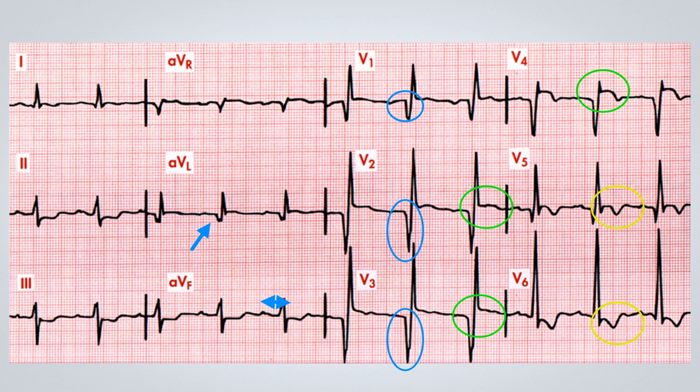If this ECG were seen for the first time, it could be compatible with an evolving acute myocardial infarction in the anterolateral wall for at least six hours. However, we know the ECG from a month ago was identical. So, what could be happening? We know the patient has anterolateral wall necrosis, and this change, particularly the ST segment elevation, has persisted.